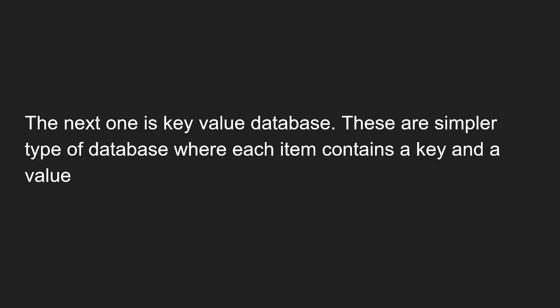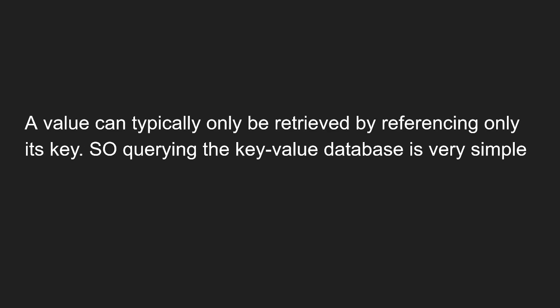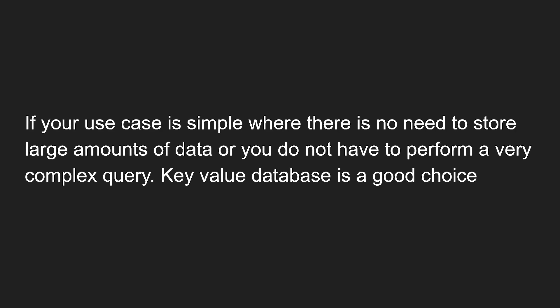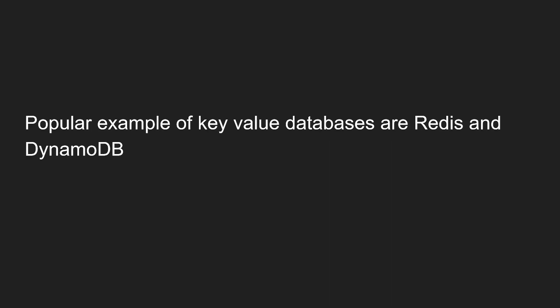The next type is the key-value database. These are a simpler type of database where each item contains a key and a value. A value can typically only be retrieved by referencing its key. Querying a key-value database is very simple. If your use case is simple — where there is no need to store large amounts of data or perform complex queries — then key-value databases are a good choice. Popular examples are Redis and DynamoDB.